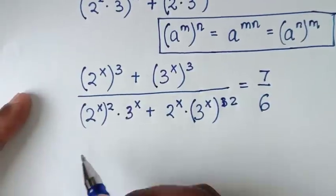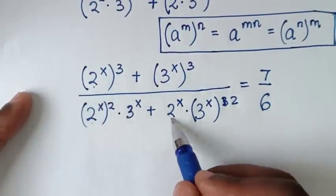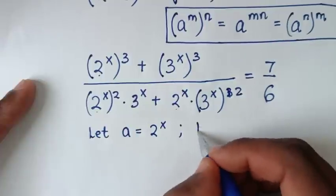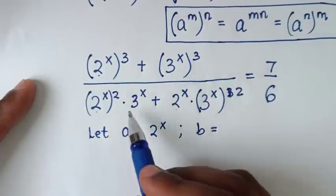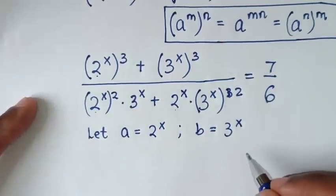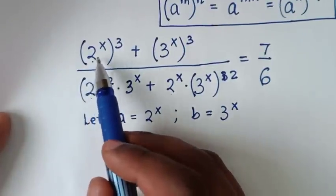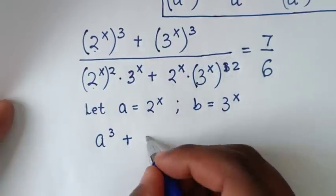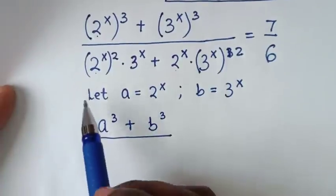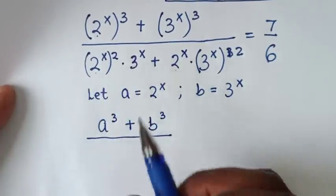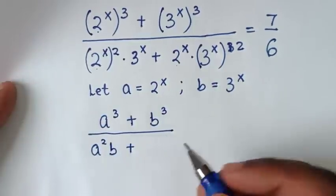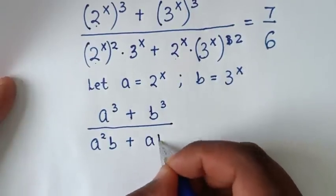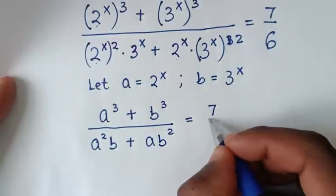We notice that 2^x and 3^x are common throughout. So we let a = 2^x and b = 3^x. The equation becomes (a³ + b³) / (a²b + ab²) = 7/6.